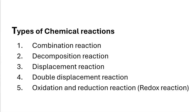There are many different forms of chemical reactions that take place in nature. These can be categorized into five major types: combination reaction, decomposition reaction, displacement reaction, double displacement reaction, and oxidation and reduction reaction, or simply redox reaction.